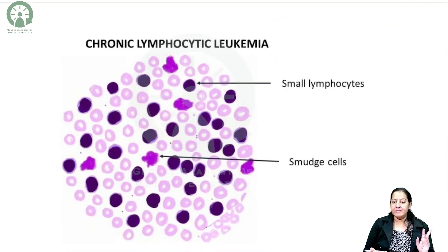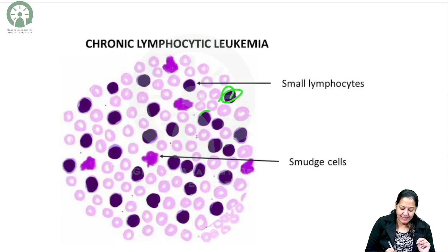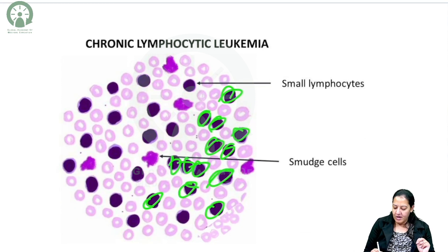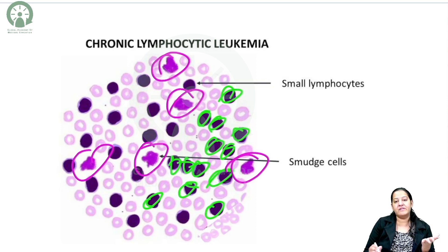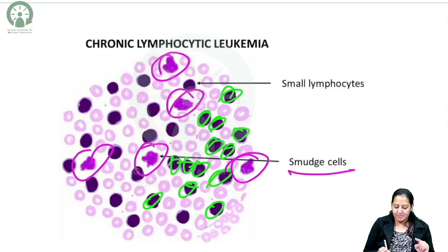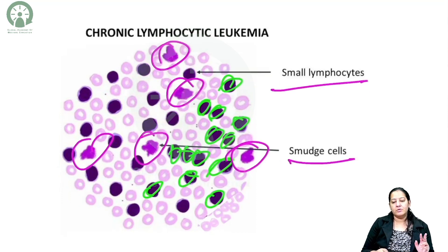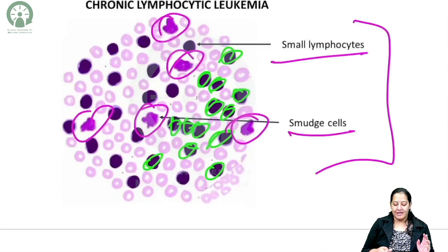Looking at the diagram, you can see two things: first, multiple small mature lymphocytes throughout the smear, and second, bursted cells with degenerated nuclei — these are the smudge cells. These two findings — small lymphocytes and smudge or basket cells — are the hallmark of CLL.